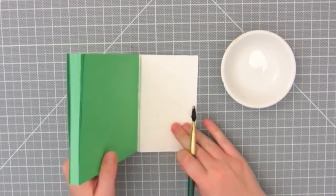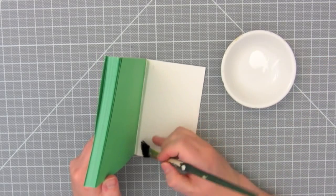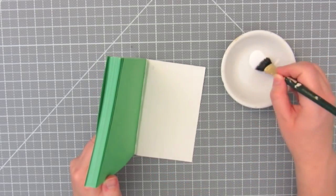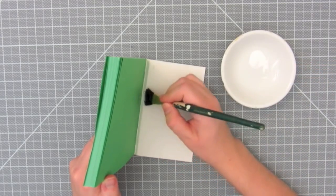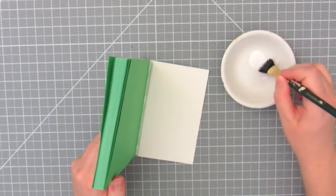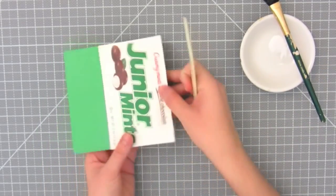Then use PVA glue in the scored areas on the front and back covers, and use the bone folder to smooth it onto the end page.